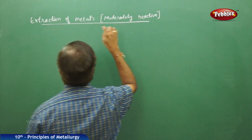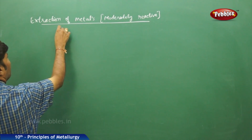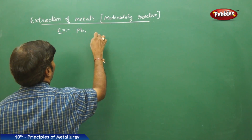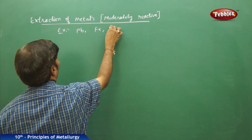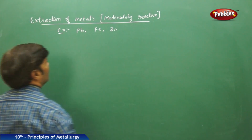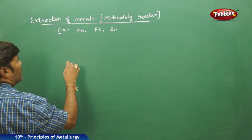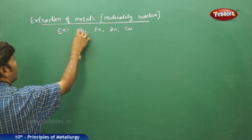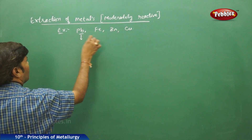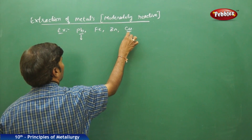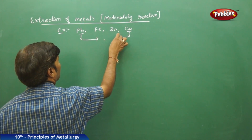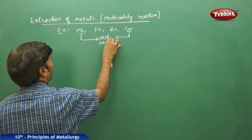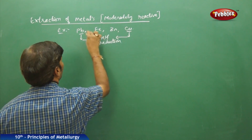For moderately reactive metals, examples include lead, iron, and zinc. Particularly, lead and copper both undergo self-reduction.